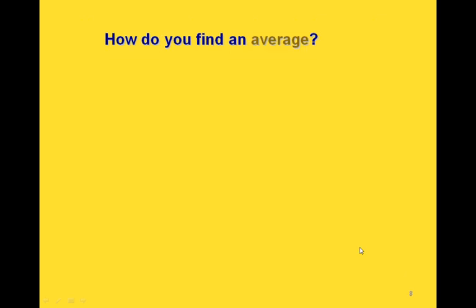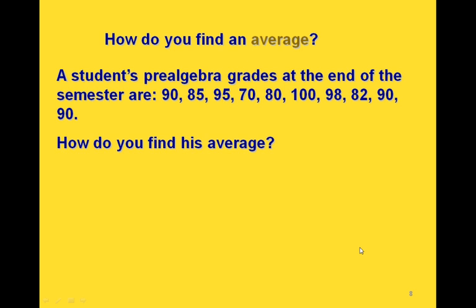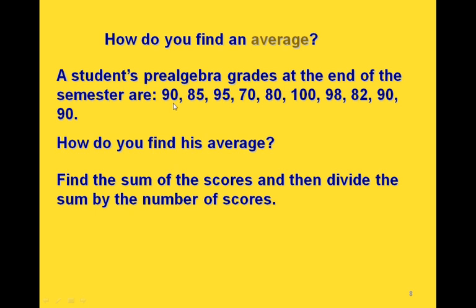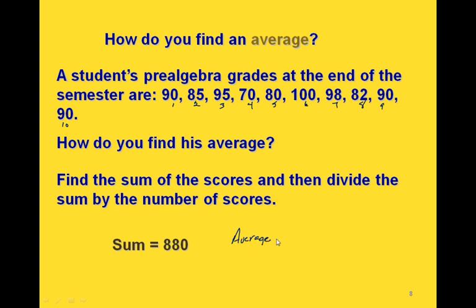One place where we use division is in finding averages. Let's say we had some grades for a pre-algebra class at the end of the semester and this student wanted to know his average. We would find the sum of all these scores and then divide it by the number of scores — we have 10 scores. So we're going to add all these scores up and divide the answer by 10. If we added all those up, the sum would be 880. So our average would be 880 divided by 10, which equals 88 — this student's average grade was an 88.